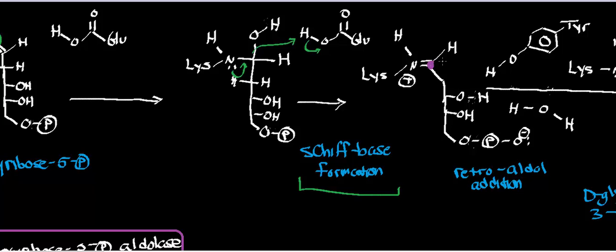The utility of protonated Schiff bases is that although the nitrogen can stabilize a positive charge, it essentially makes the adjacent carbon electrophilic. The nitrogen — which I'll circle in light blue — acts as an electron sink. So in protonated Schiff bases especially, the nitrogen acts as an electron sink, making that carbon more electrophilic.